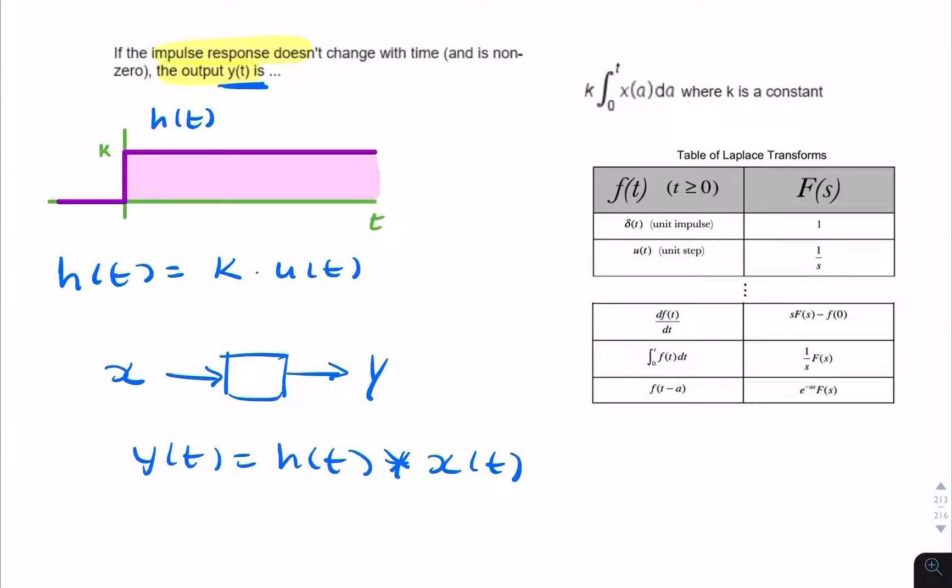So we could do that, or what we could do is use the information we have about H of T and find H of S. And when we find H of S, we can then find Y of S. And then from Y of S, we can find Y of T.